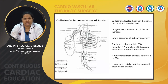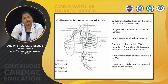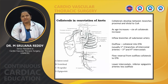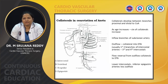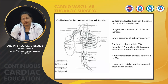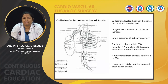Coming to the collateral supply in coarctation, collaterals usually develop between branches proximal and distal to the coarctation, and their size increases with age. They are uncommonly seen in neonates and infants. The inflow branches are from the branches of the subclavian artery, and the outflow is into the descending thoracic aorta, usually into the third and fourth intercostal arteries, which are the first two branches post-coarctation. Flow reversal has been demonstrated from the outflow collaterals, while the lower intercostals and inferior epigastric arteries are less involved.